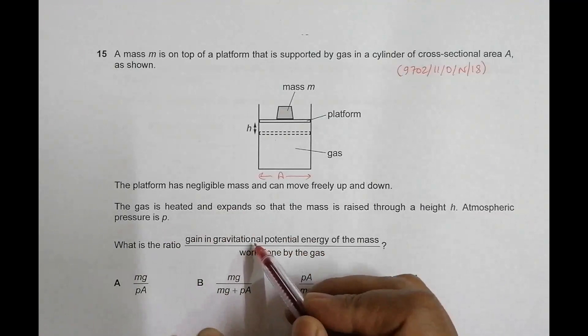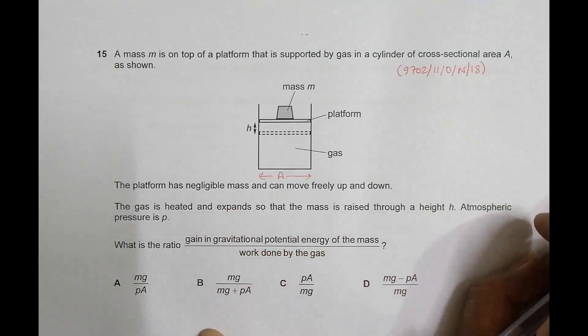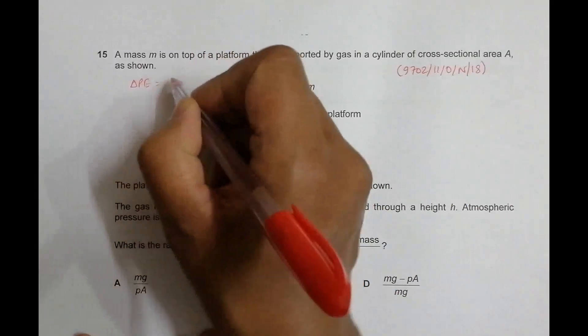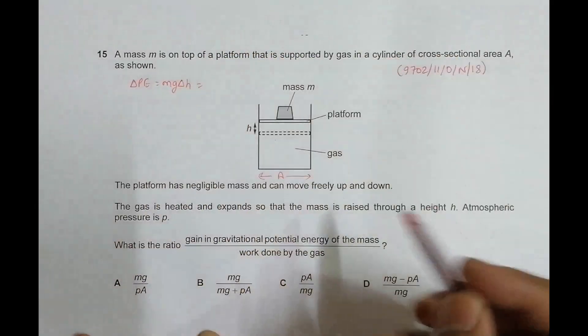The first one is easy. The gain in gravitational potential energy is definitely equal to mg times delta h. So here delta h is simply h, so it's equal to mgh. That's not a problem.